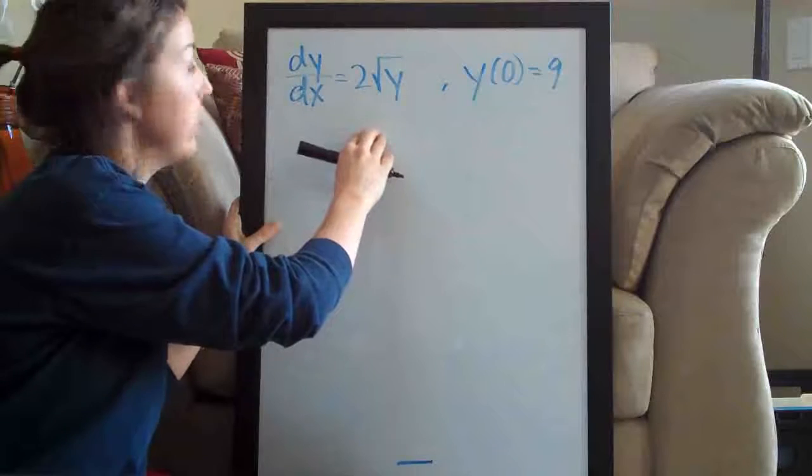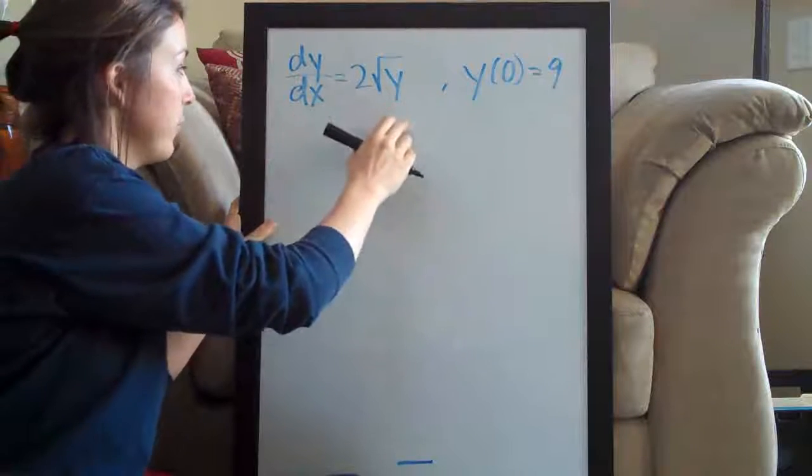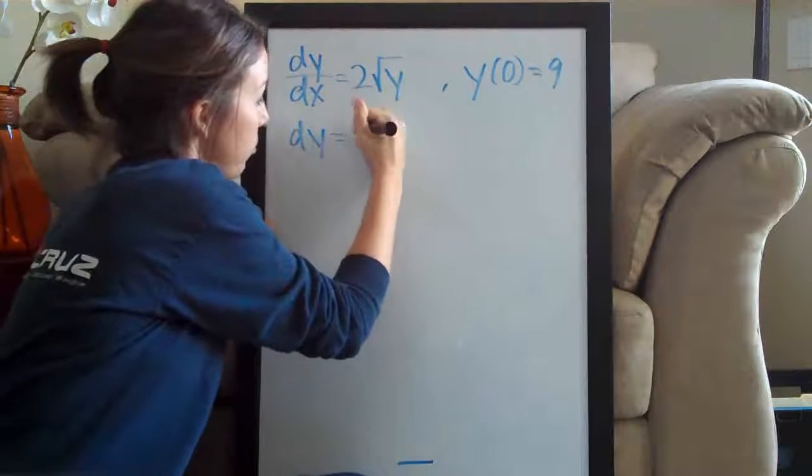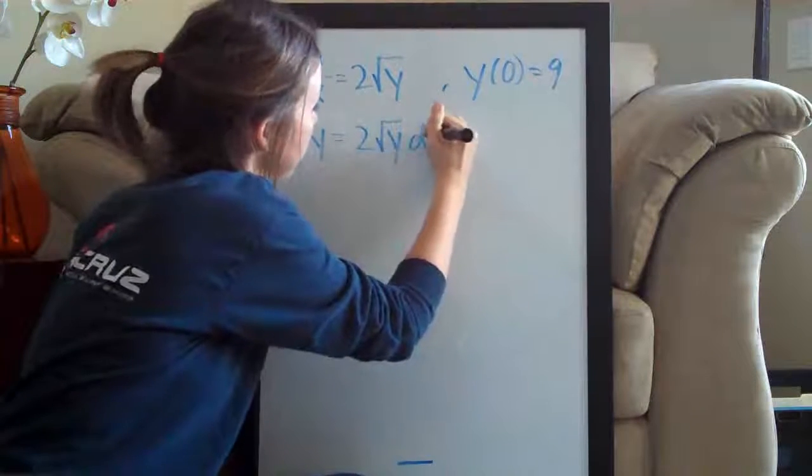We're going to multiply both sides by dx. We get dy equals 2 times the square root of y times dx.